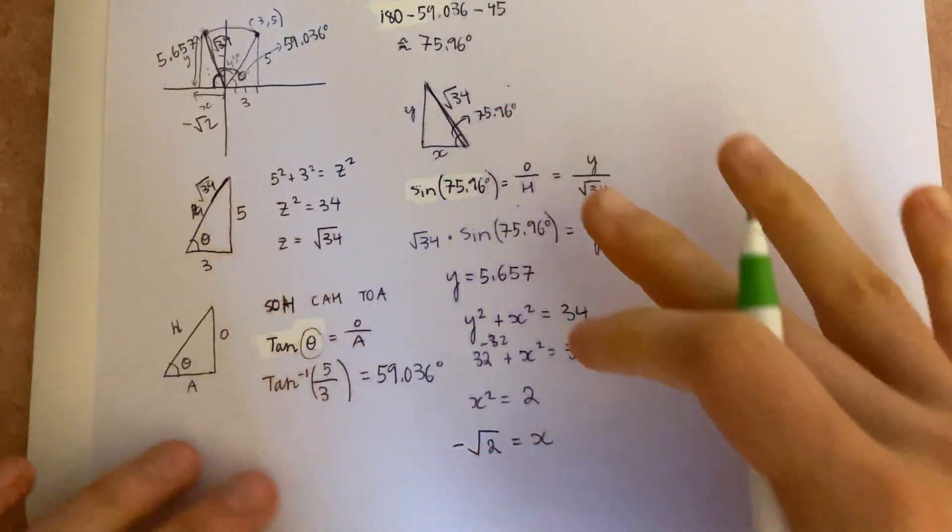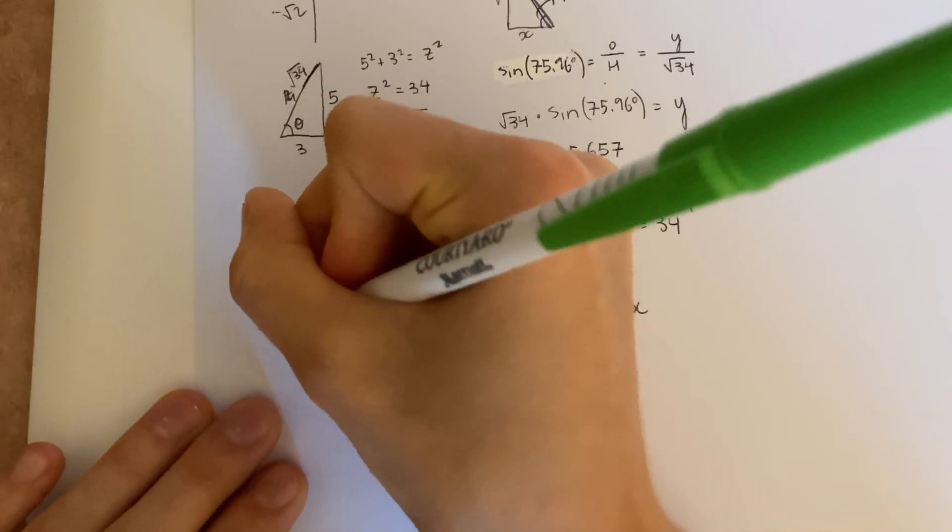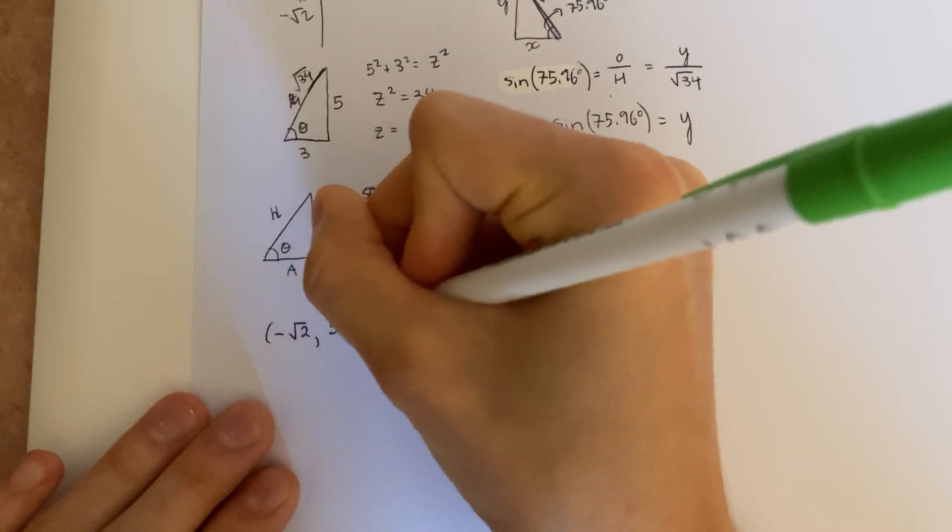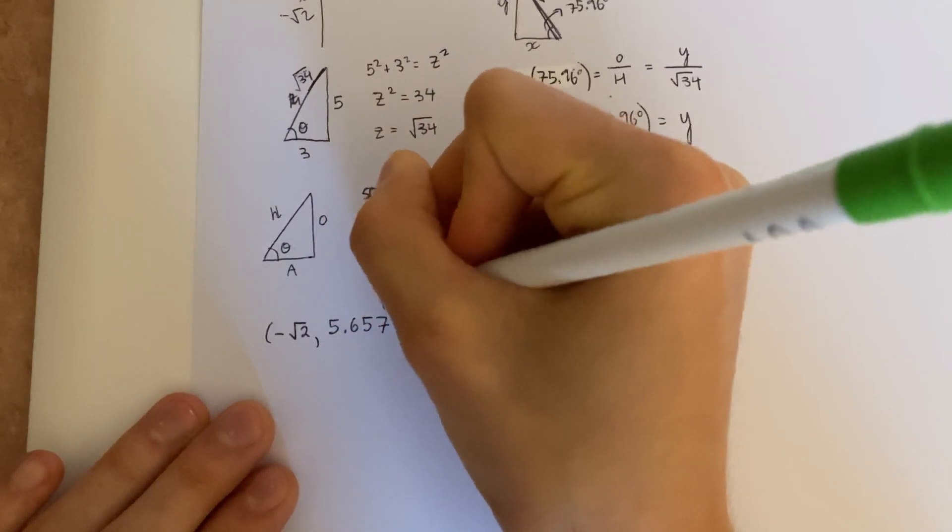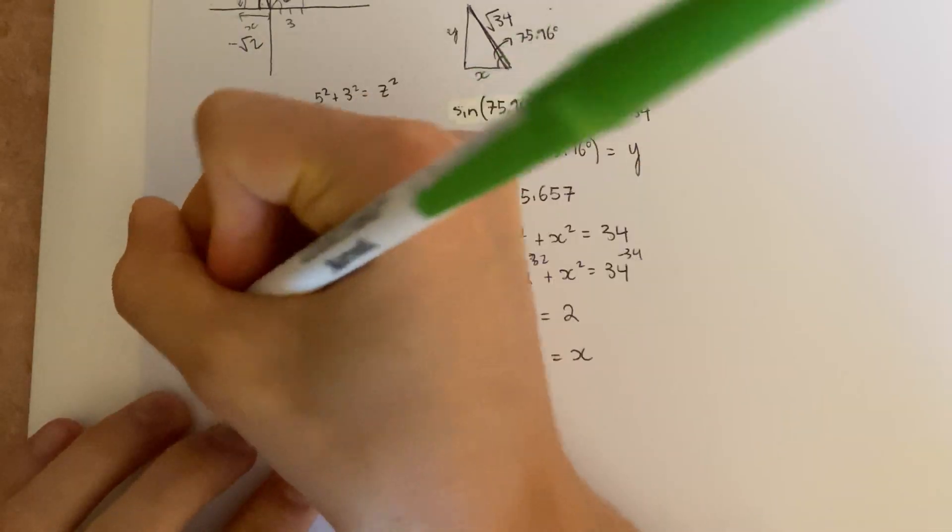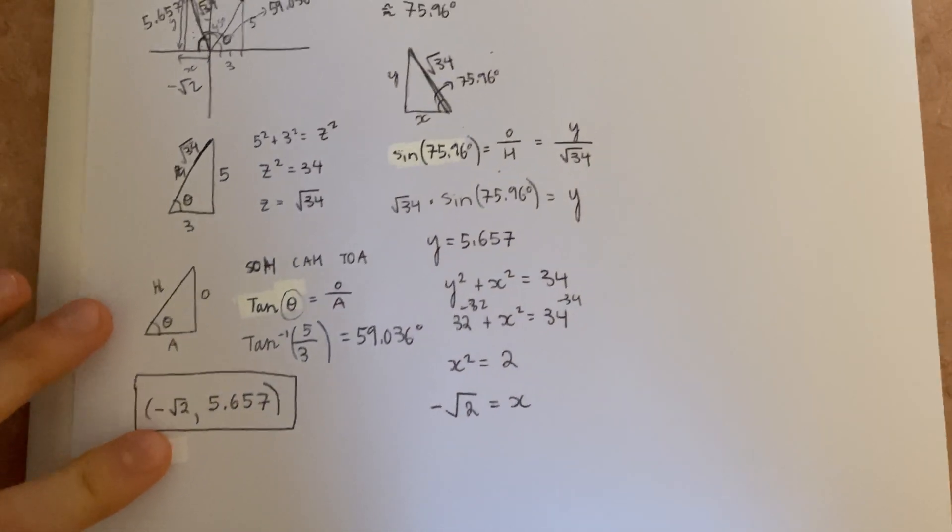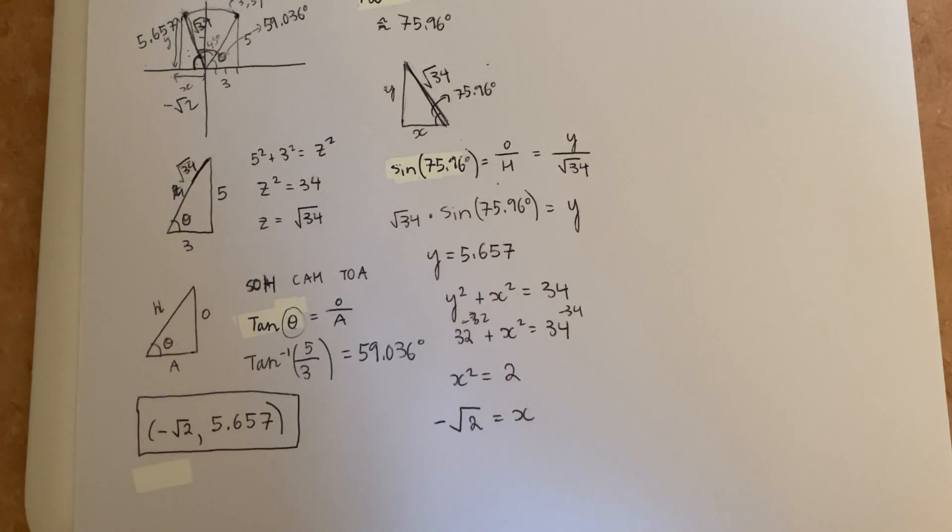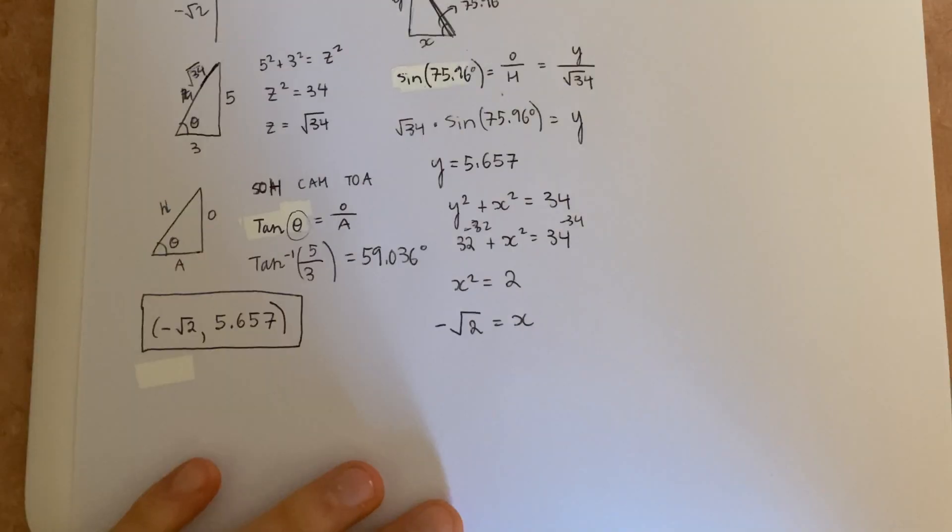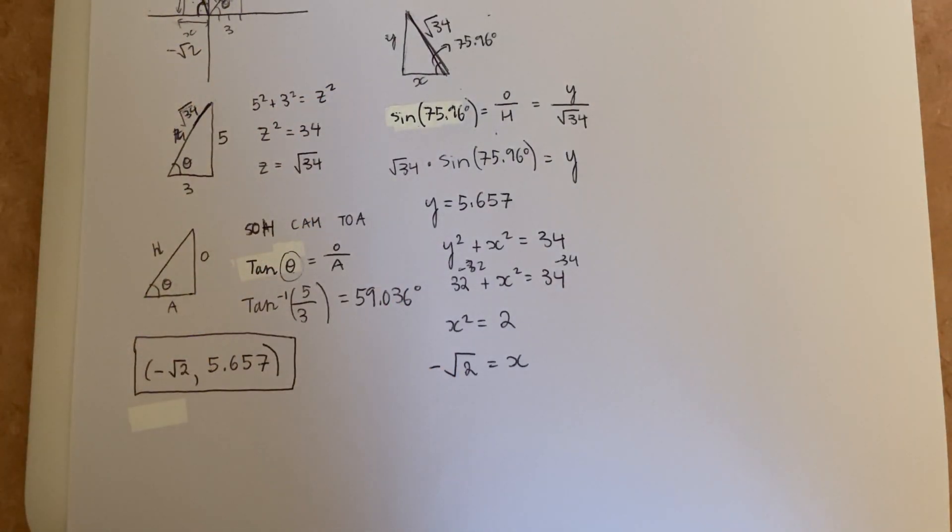So that is the final point. Let's write it out: (-√2, 5.657). So that is the answer. There are many different ways to do this. You can solve using complex numbers, but I think this is just a basic intuitive way. If you know a little bit of trigonometry, you can solve questions like these. So I hope you guys found this video helpful. If you did, don't forget to give it a thumbs up. And let me know if you need help on any other questions. Toodles!